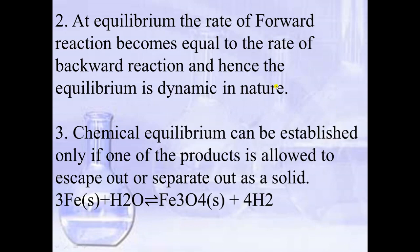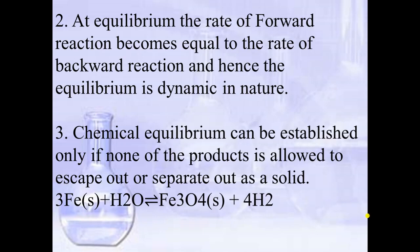Second characteristic: at equilibrium, the rate of the forward reaction becomes equal to the rate of the backward reaction — the speed of the forward reaction equals the speed of the backward reaction. At that stage we say the reaction is in equilibrium, and there is continuous change, which is why we use the term 'dynamic' — equilibrium is dynamic in nature. Third: chemical equilibrium can be established only if none of the products is allowed to escape out or separate out as a solid. If hydrogen gas is removed, the reaction becomes irreversible and there will be no equilibrium.